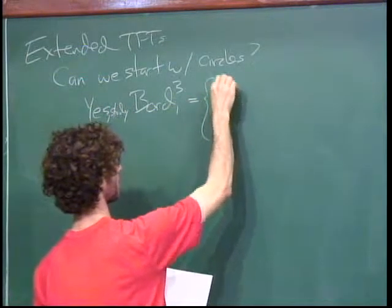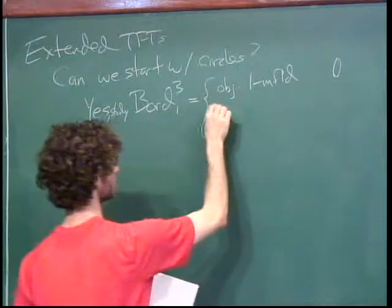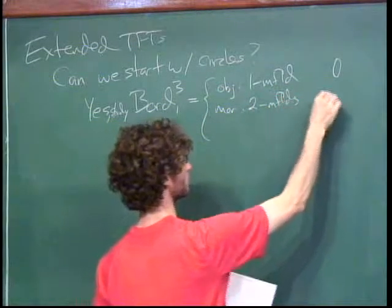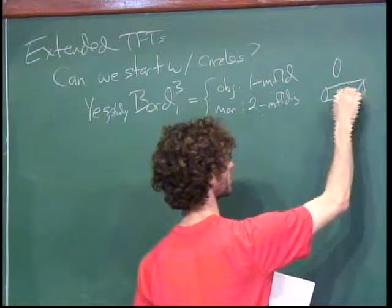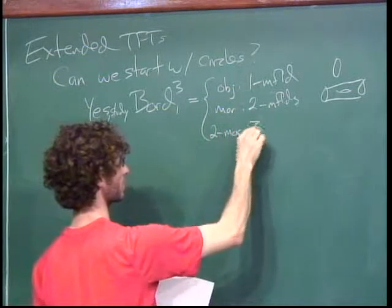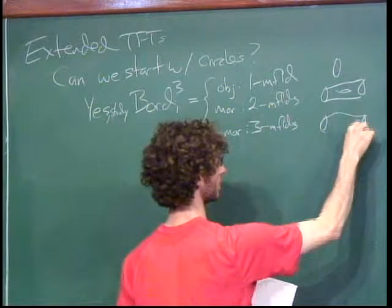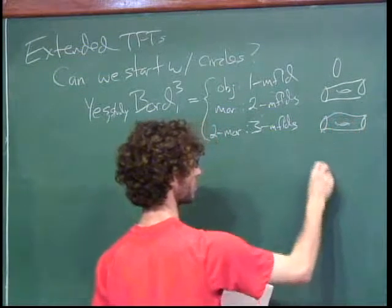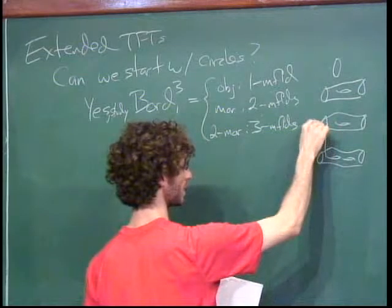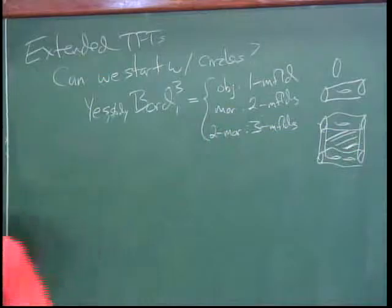This thing has objects which are 1-manifolds, like the circle. The morphisms are 2-manifolds that are bordisms. And then there are 2-morphisms as well, which are 3-manifolds — things that look like: I start with some source manifold, have some target 2-manifolds, a product structure on the boundary, and then some 3-manifold filling it in.